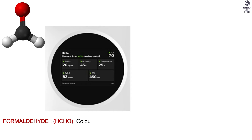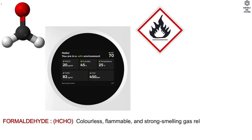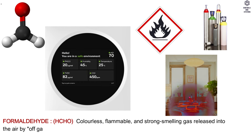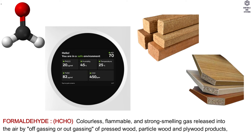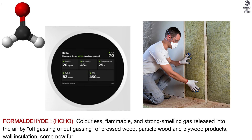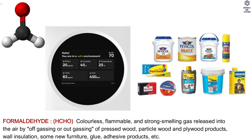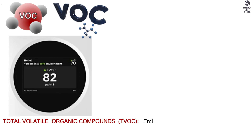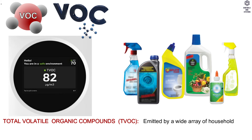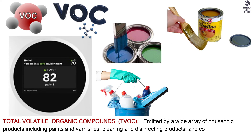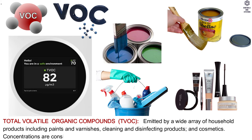Formaldehyde (HCHO): a colorless, flammable, and strong-smelling gas released into the air by off-gassing or out-gassing of pressed wood, particle board and plywood products, wall insulation, some new furniture, glue, and adhesive products. Total volatile organic compounds (TVOC): emitted by a wide array of household products including paints and varnishes, cleaning and disinfecting products, and cosmetics. Concentrations are consistently higher indoors — up to 10 times higher than outdoors.